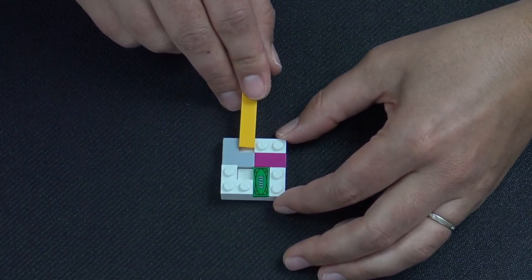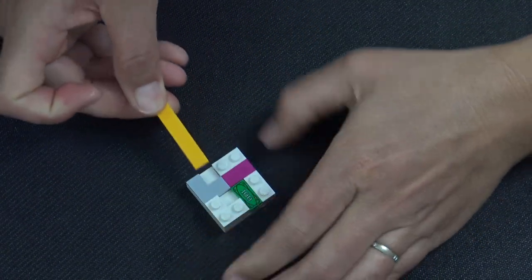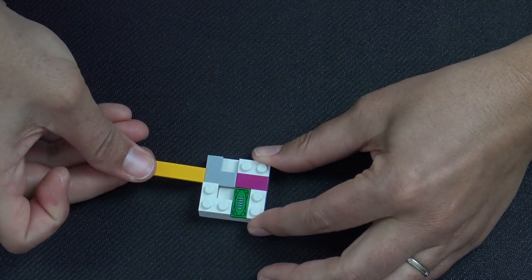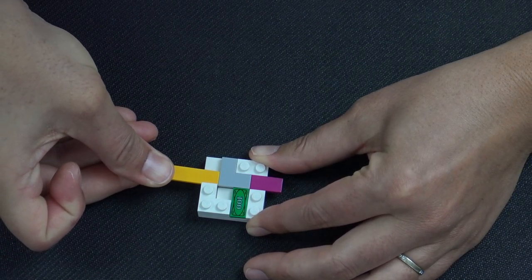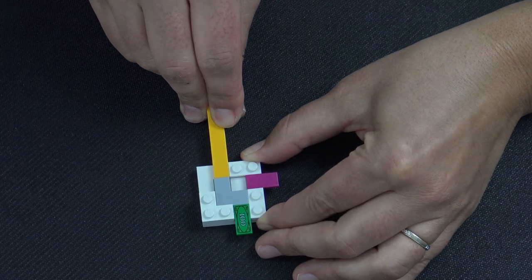So if I'm trying to get the money, it doesn't appear that there's any way to get the money. But if I slide this two by two corner tile this way, then I can also slide it that way.